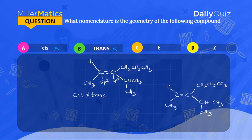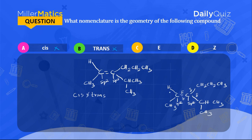While naming E and Z compounds, we use the Cahn-Ingold-Prelog principle. The principle says that you assign priorities to the groups or atoms directly attached to each of the sp2 carbons. This is an sp2 carbon because it has three sigma bonds and one pi bond — two sigma bonds to substituents, one sigma bond in the double bond, and one pi bond.